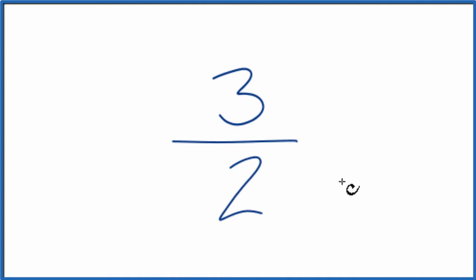In this case, what we have is called an improper fraction. The numerator, the number on top, is larger than the denominator, the number on the bottom.